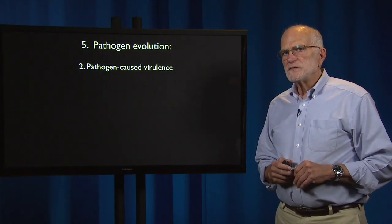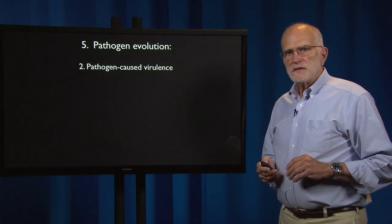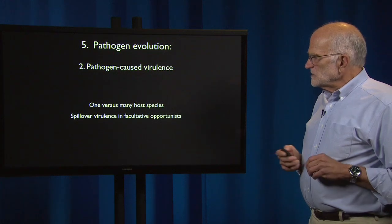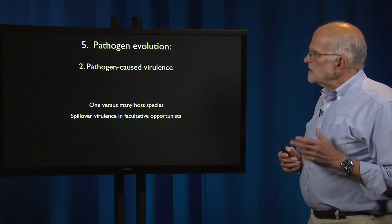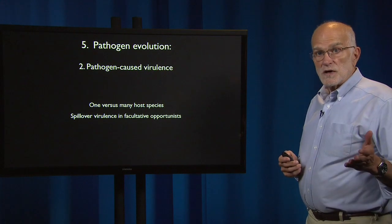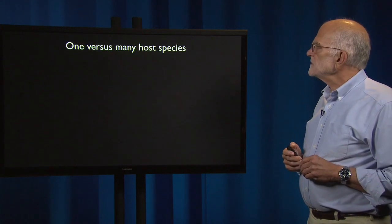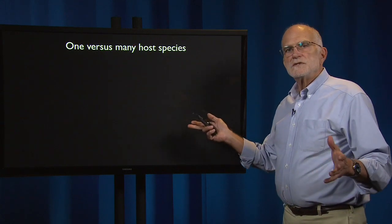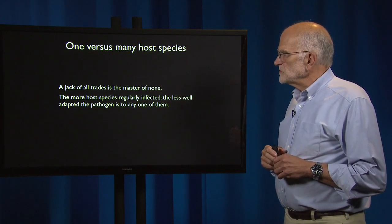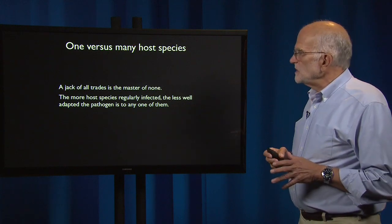Another major consideration in the evolution of pathogen virulence is host range, or how many different hosts that pathogen can infect. The question is whether the pathogen is infecting one or many host species. The principle here is that a jack of all trades is the master of none. The more host species that are regularly infected, the less well adapted the pathogen will be to any one of them.